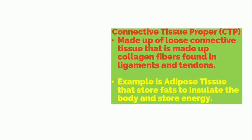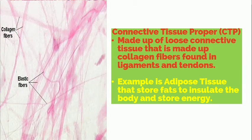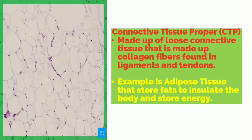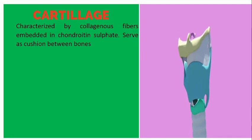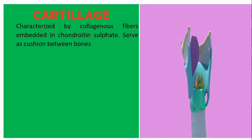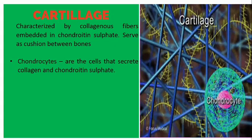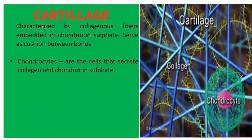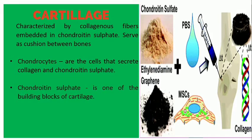Connective tissue proper, or CTP, is made up of loose connective tissue with collagen fibers found in ligaments and tendons. For example, adipose tissue stores fats to insulate the body and store energy. Cartilage is characterized by collagenous fibers embedded in chondroitin sulfate, which serves as a cushion between bones. Chondrocytes are the cells that secrete collagen and chondroitin sulfate, one of the building blocks of cartilage.